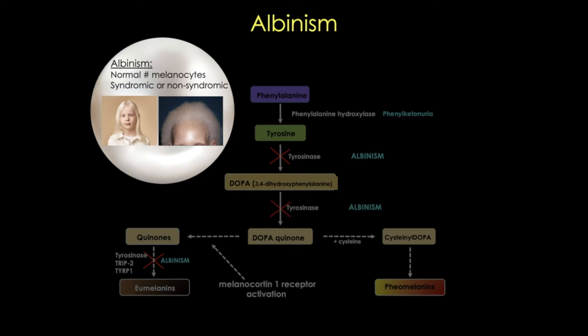Albinism is usually caused by recessive mutations and occurs worldwide, affecting people of all races and sexes. Here you can see albinism in a person with white skin on the left, and the results of albinism in a person with dark skin on the right.